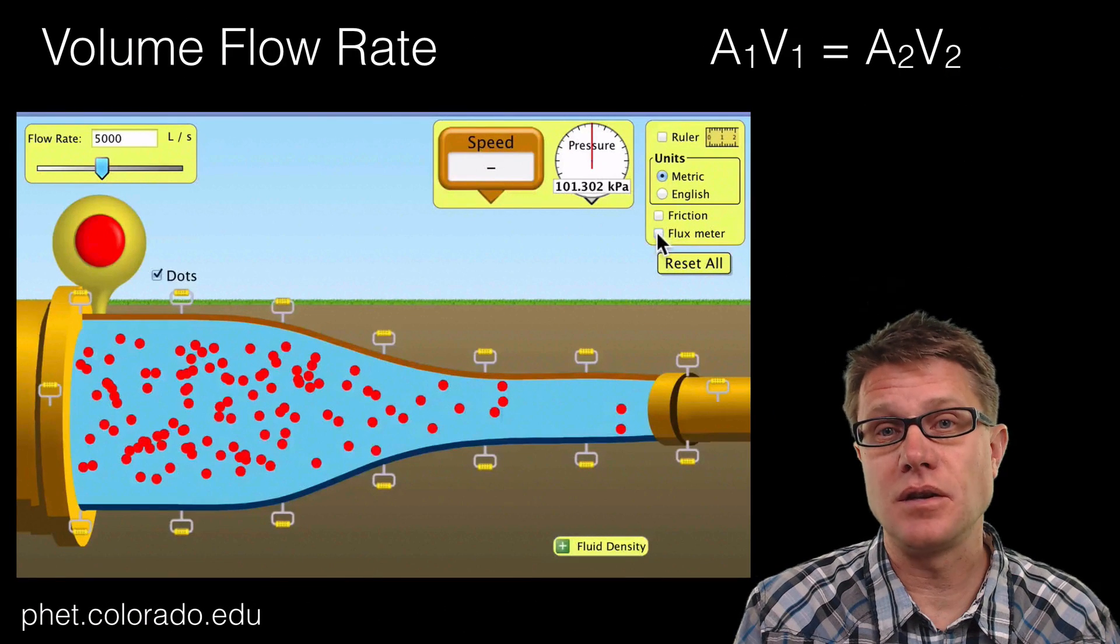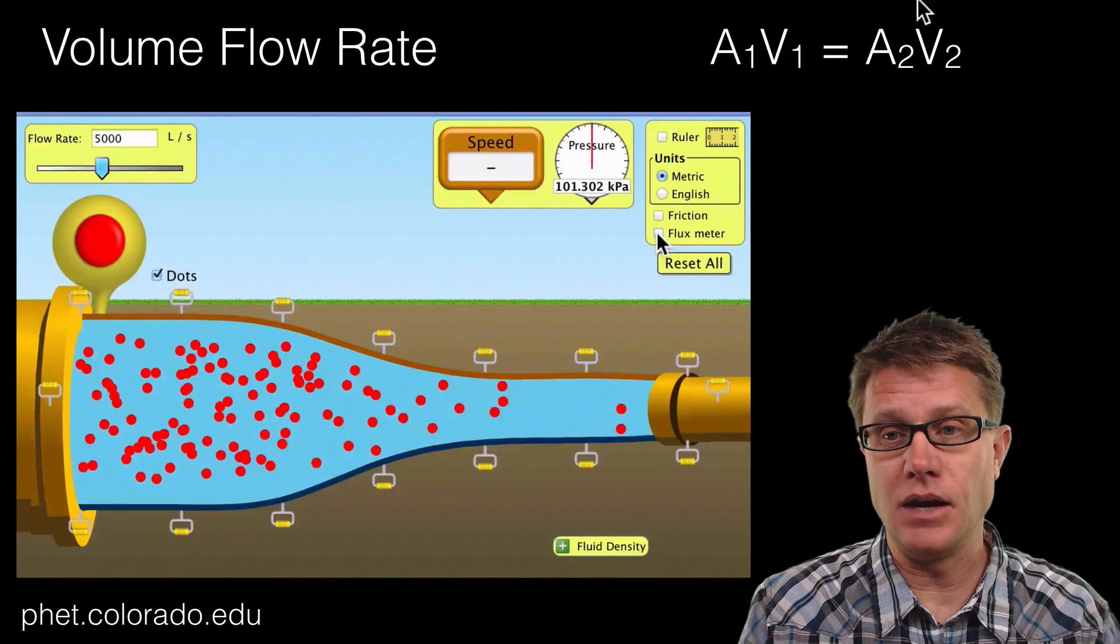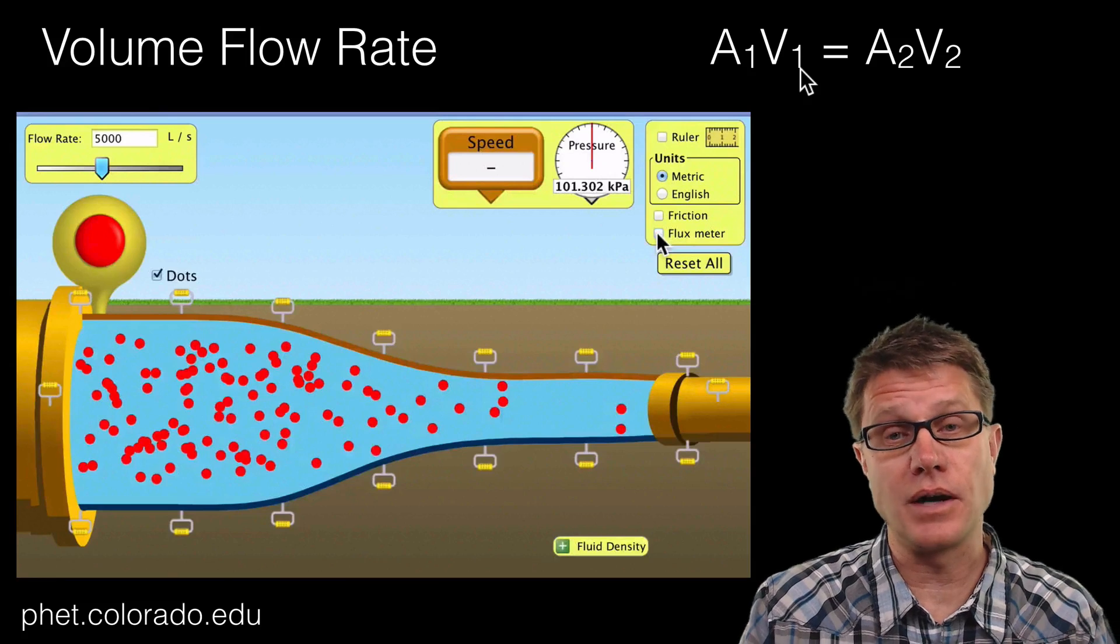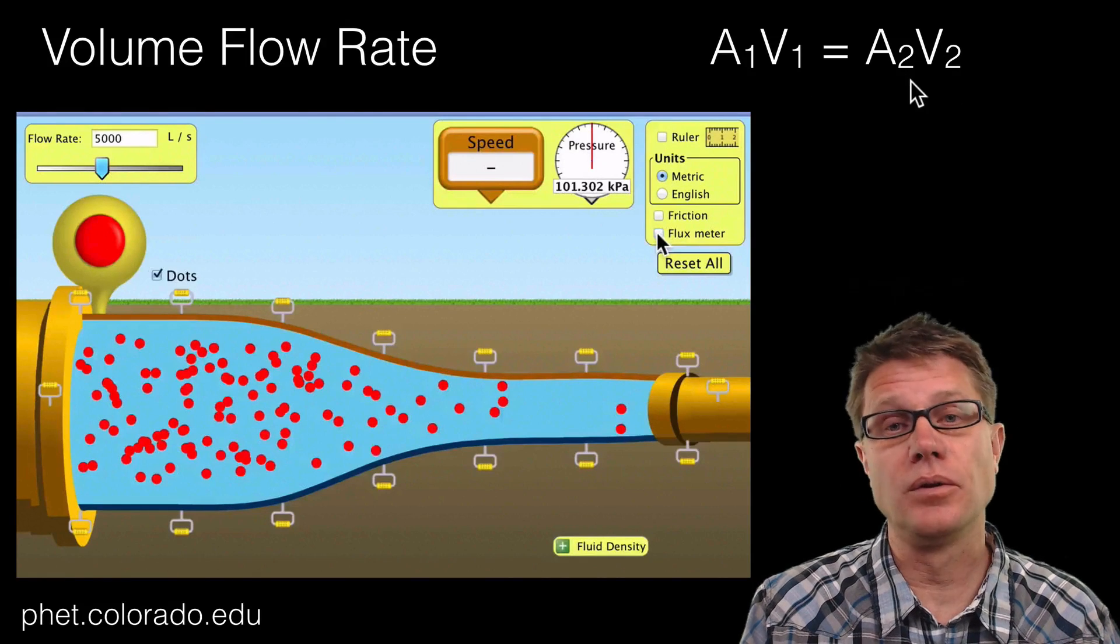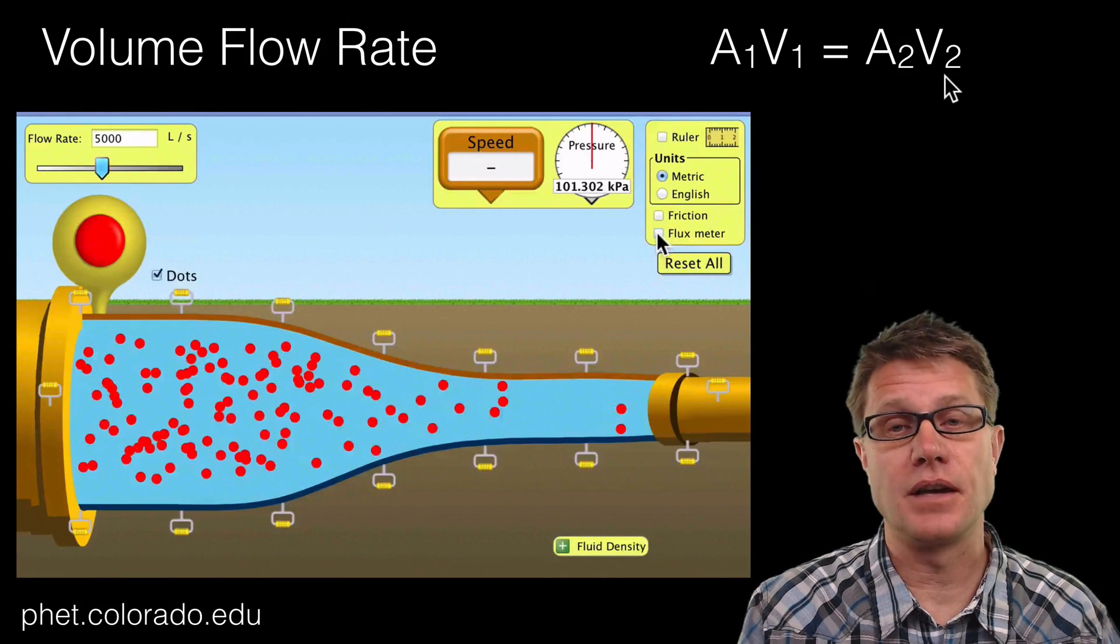And this is a PhET simulation that shows that. Again, A1 times V1, or the cross-sectional area times the velocity before, equals the cross-sectional area times the velocity after.